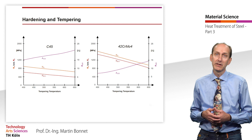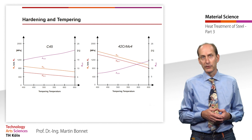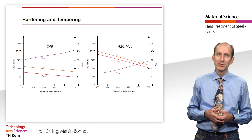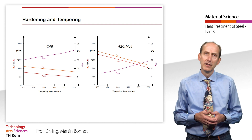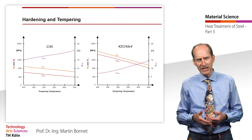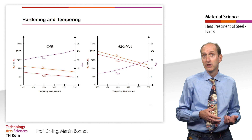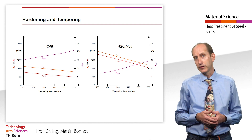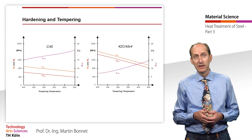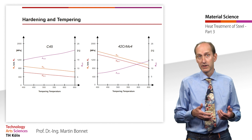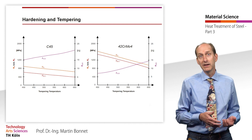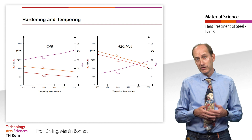The hardening and tempering diagram shown on the left for the hardened and tempered steel C45 shows how the mechanical properties change when these hardened steels are tempered to temperatures between 400 and 650 degrees Celsius. At 400 degrees Celsius, the tensile strength RM and yield strength RE are higher, but the elongation at break A5.65 is lower than in the upper temperature range if this is selected.